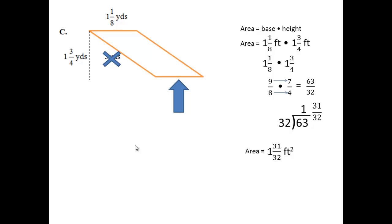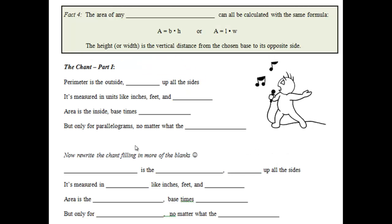We have one more page to go over. Fact 4: the area of any parallelogram can all be calculated with the same formula — area equals base times height, or area equals length times width. The height or width is the vertical distance from the chosen base to its opposite side, not diagonal. The word that goes in the blank is 'parallelogram' — and remember, when I say parallelogram, I mean anything with two pairs of parallel sides: rectangles, squares, and rhombi.